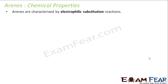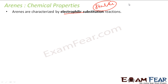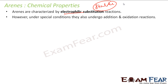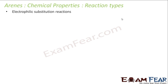Arenes generally follow electrophilic substitution reactions. Why substitution? Because they are very stable. These are stable even though they have double bonds — stable due to resonance and other effects discussed in the past chapter. They are stable and since they are stable they generally go for electrophilic substitution reaction. Why electrophilic? Since they have double bonds, they can attract electrophiles. But under certain conditions they also undergo addition and oxidation reactions.